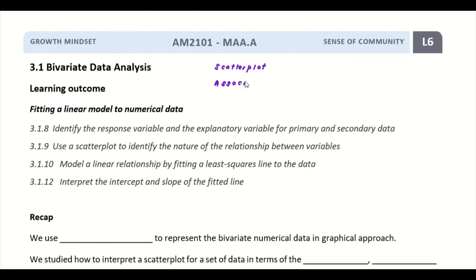We learned through three areas: the form, the direction, and the strength. Last but not least, we learned how to find the correlation coefficient. These are the things we covered in the previous lesson.